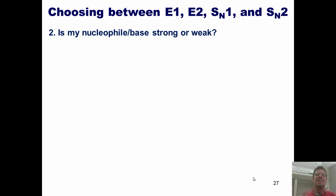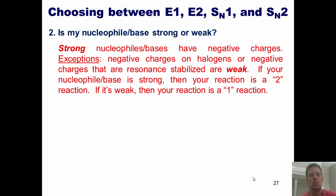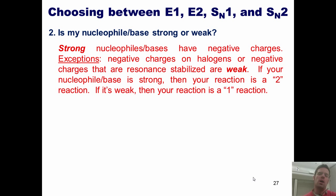Question number two: is my nucleophile/base strong or weak? Strong nucleophiles/bases have negative charges — with some exceptions. Negative charges on halogens, or negative charges that are resonance-stabilized, are weak. If your nucleophile/base is strong, your reaction will be a 2 — either SN2 or E2. If it's weak, it will be a 1 — either SN1 or E1. A localized negative charge not on a halogen: strong. A negative charge on halogens, a resonance-delocalized negative charge, or no negative charge at all: weak.